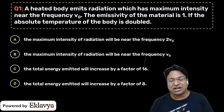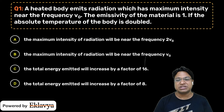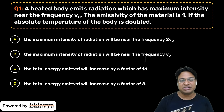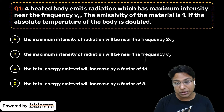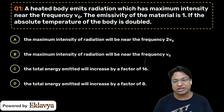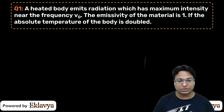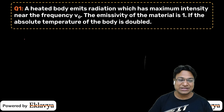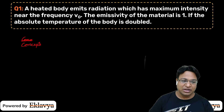Alright kids, let's start today's questions. The first question: a heated body emits radiation which has maximum intensity near frequency ν₀. The emissivity of the material is one — that is, we are talking about a black body. If the absolute temperature of the body is doubled, we are judging by four options. The concept we are using is Wien's Displacement Law.